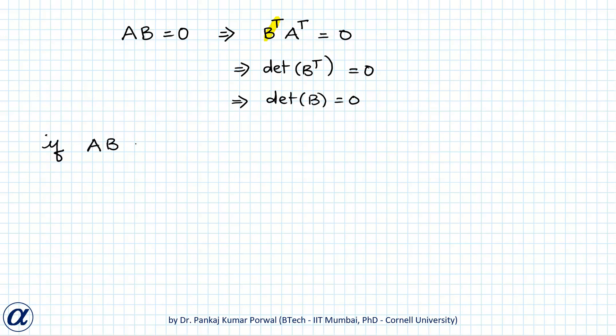So here we have proved that if AB is zero where A and B are non-zero matrices, then this implies determinant of A is zero and determinant of B is zero.